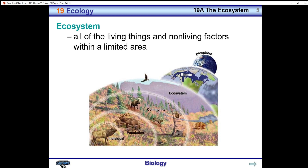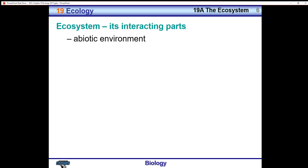To begin our study, we must understand what an ecosystem is. All living things and non-living factors within a limited area are considered part of the ecosystem. An ecosystem is made up of various communities, and each community is made up of populations of different animals, and each population ultimately begins with an individual. The ecosystem itself consists of interacting parts working together.